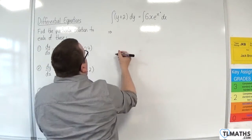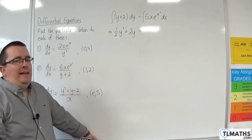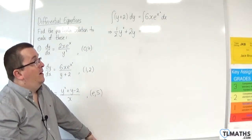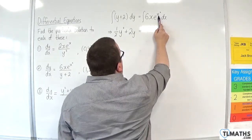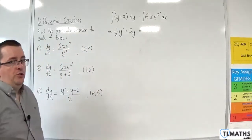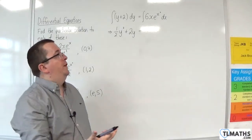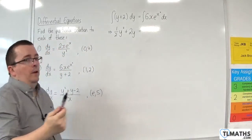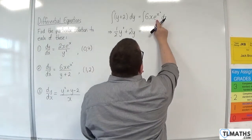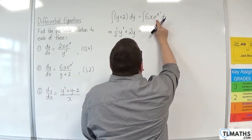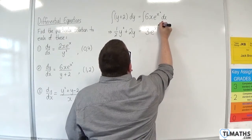On the left-hand side, straightforward to integrate — we'll have 1 half y squared plus 2y. On the right-hand side, we have 6x e to the x squared. This is not integration by parts, because we can't integrate e to the x squared. What you should recognise is x squared is the interior function, and it differentiates to 2x, which we have a multiple of out the front. So you reverse the chain rule — we know e to the x squared differentiates to 2x e to the x squared, so we've got three lots of it: 3e to the x squared plus c.